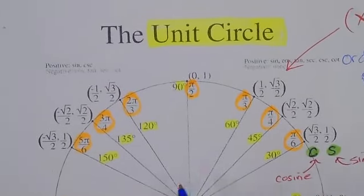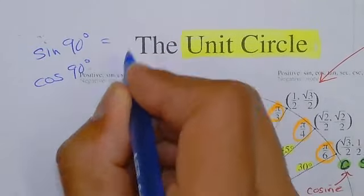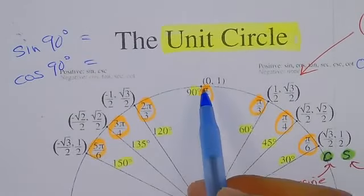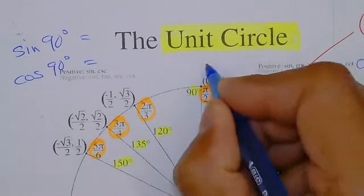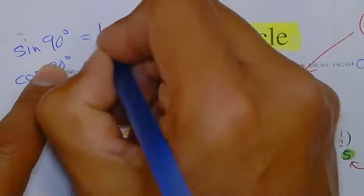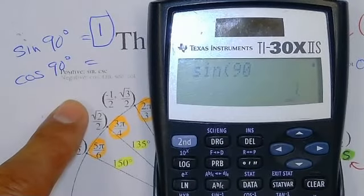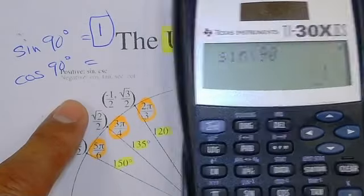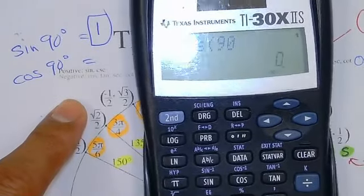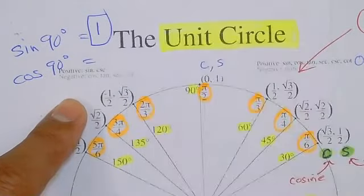Looking at the unit circle — what is sine and cosine of 90 degrees? Remember the first coordinate is cosine and the second is sine. What is sine of 90? One. Let's check the calculator — sine of 90 is 1. And cosine of 90 is going to give me zero. Cosine of 90 — it's all there.